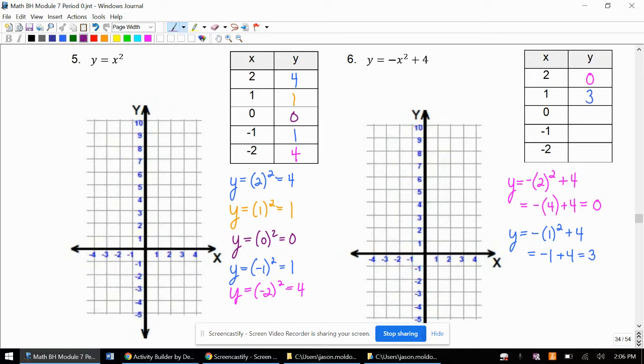We're going to plug in 0. 0 squared is 0. We can ignore that negative plus 4 is 4.